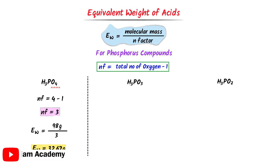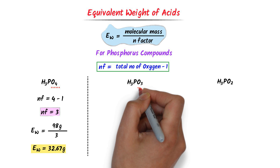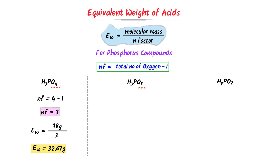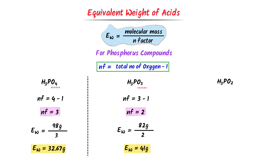In case of this compound, I again use the trick. N factor is equal to oxygen atoms minus 1. There are 3 oxygen atoms, so I write 3 minus 1 and get 2. The N factor of this compound is 2. Its equivalent weight is equal to the molecular weight, which is 82 gram, upon its N factor which is 2. After calculation, I get 41 gram. So the equivalent weight of this compound is 41 gram.